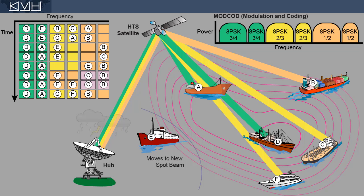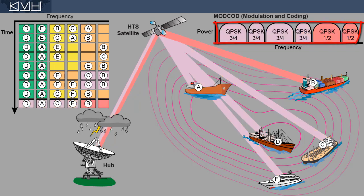On rare occasions, extreme weather at the hub's location can also affect the properties of the return link. In this case, despite perfect conditions at the vessel's locations, the entire in-route group changes to a modulation encoding that the hub can reliably process.